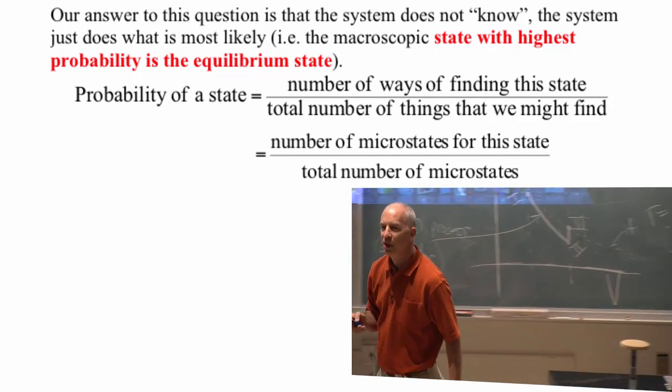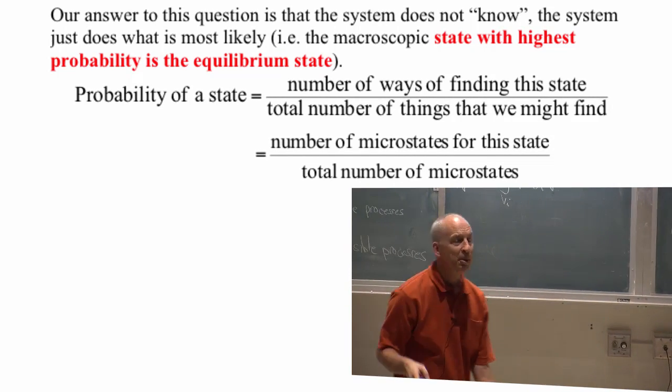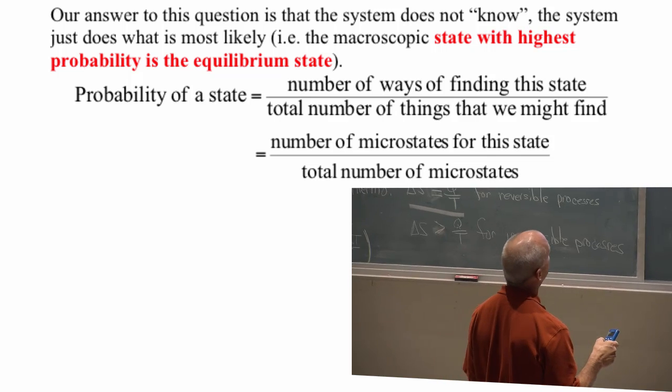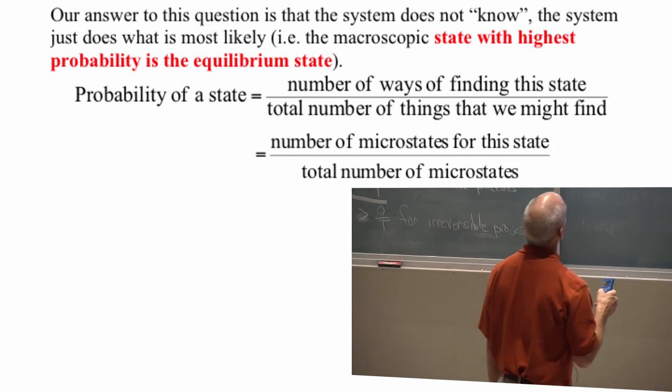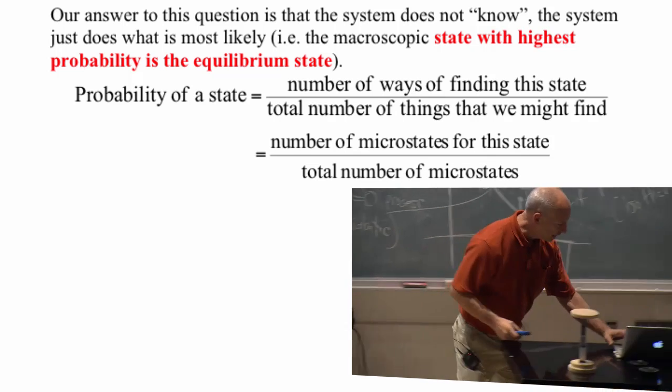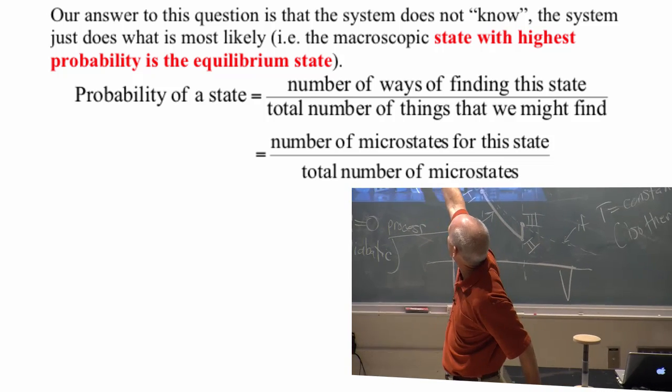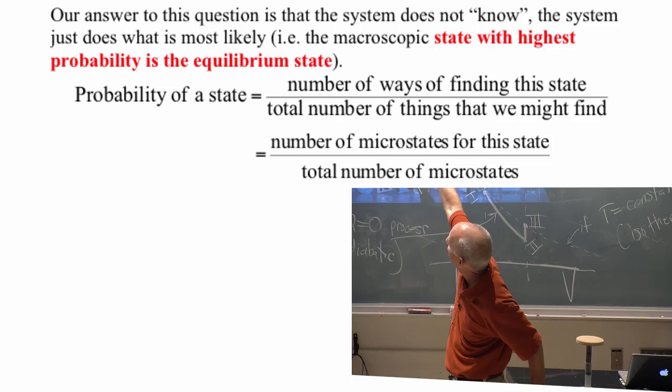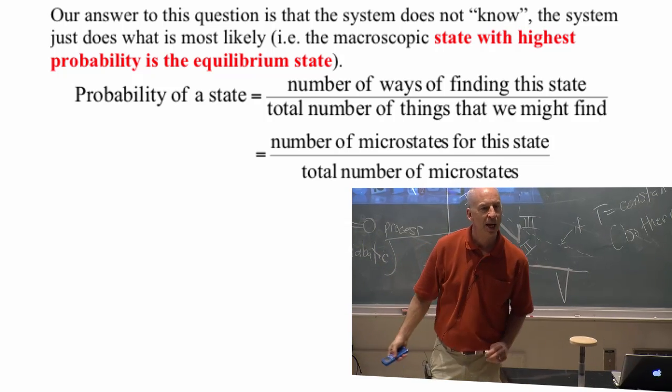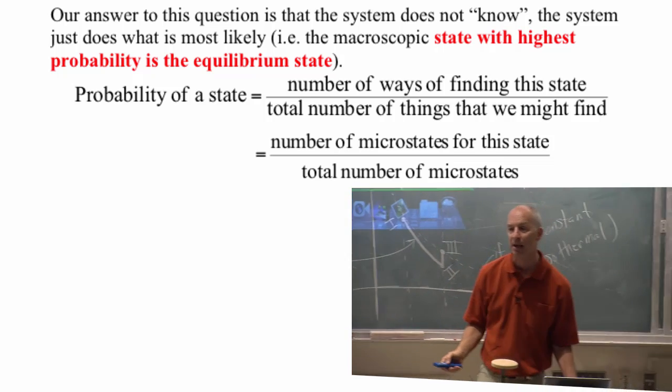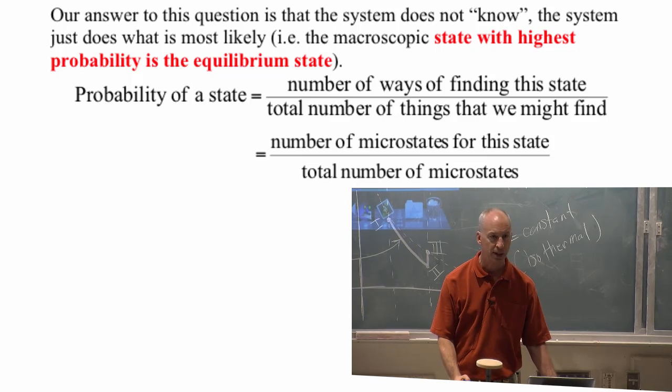Well, if it's all probability, then the most probable state is the equilibrium state and the probability is determined by the number of microstates. The probability of some macroscopic state is just determined by the number of microstates that give you that macroscopic state.